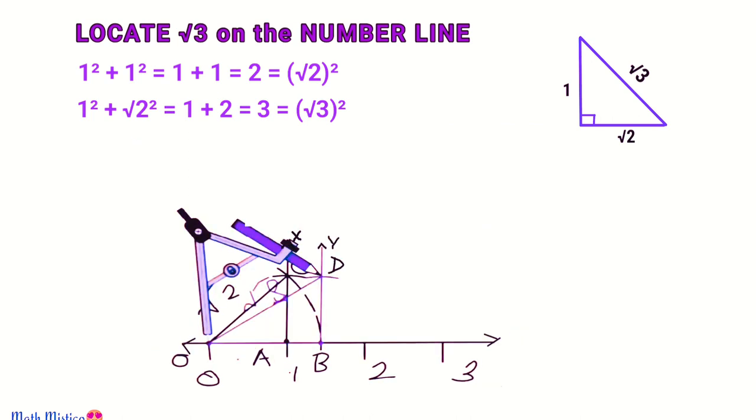Next, in order to represent √3 on the number line, we will take OD as the radius, O as center, and draw an arc so that it intersects the number line. So OE is equal to √3.